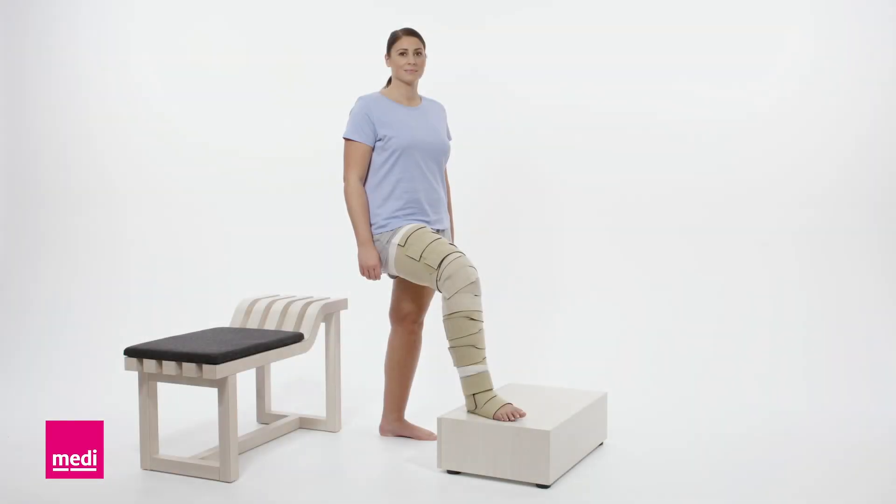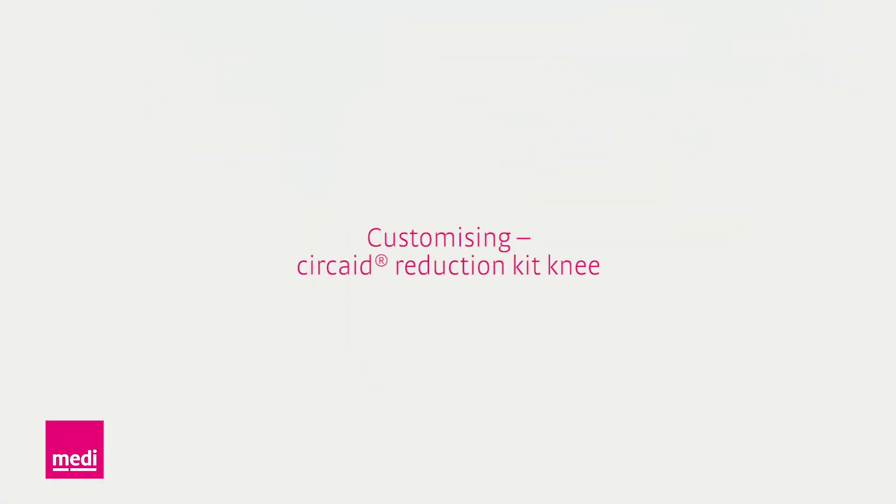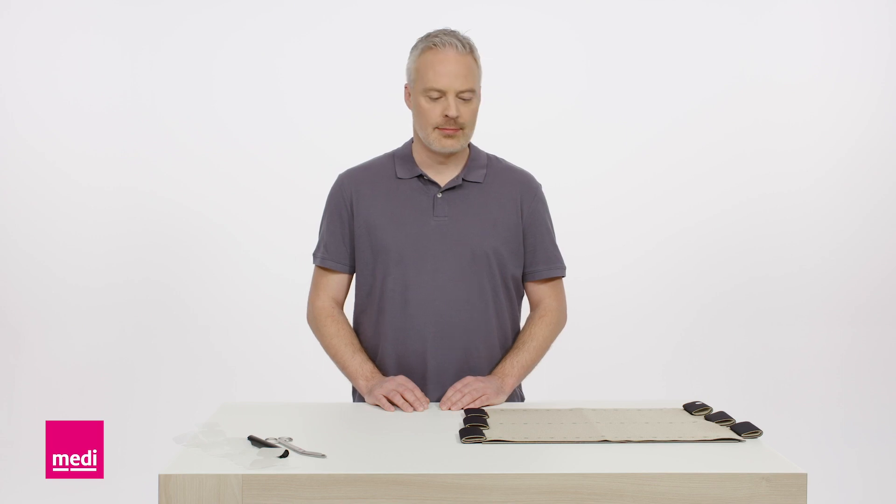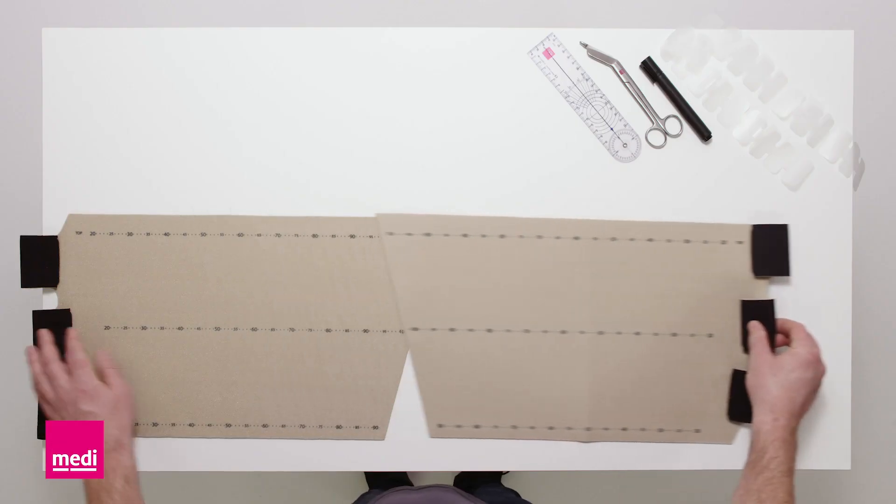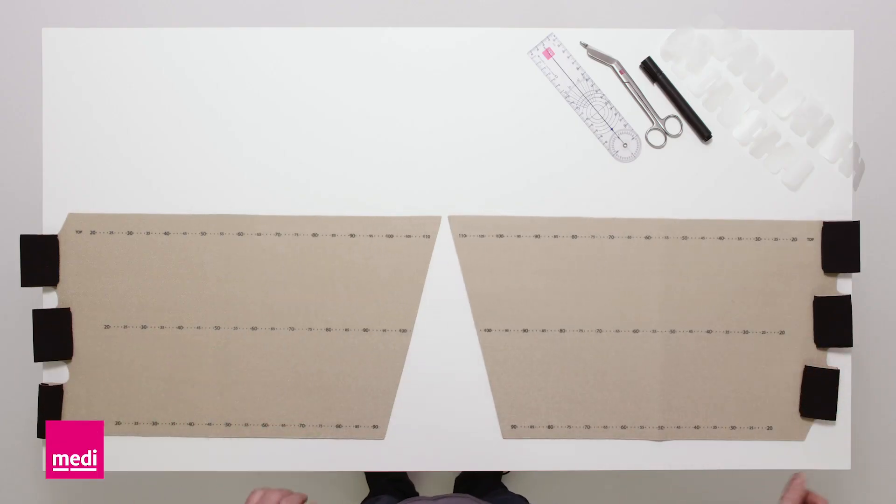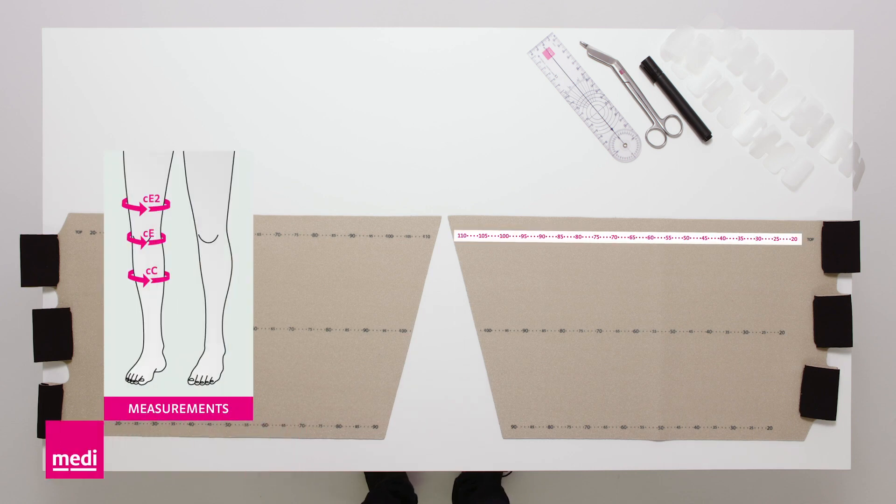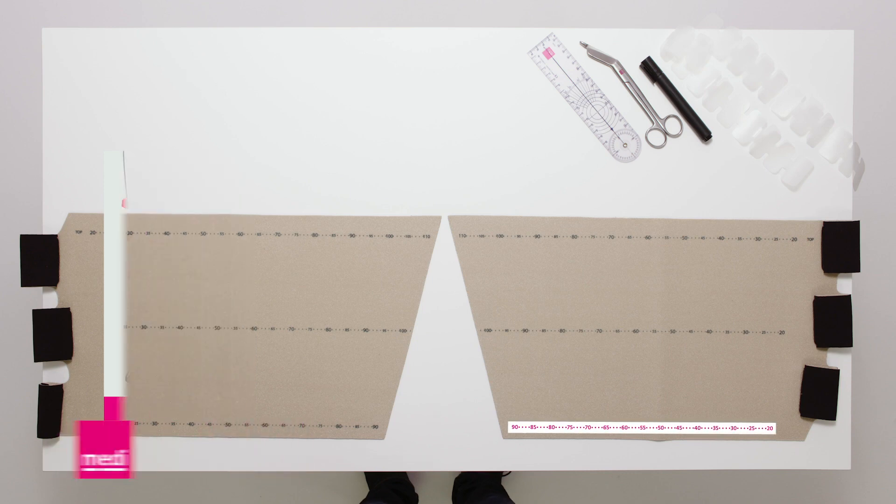The Circaid Reduction Kit Leg consists of foot, lower leg, knee, and upper leg. This garment consists of two components and a spine. The printed numbers represent the thigh circumference E2, the knee circumference E, and the calf circumference C.